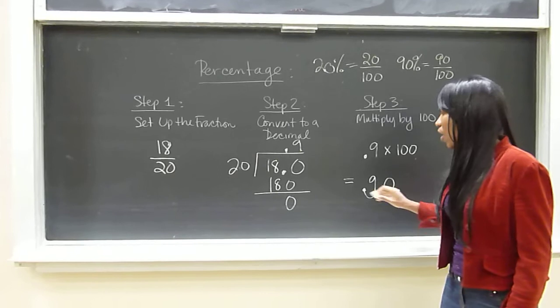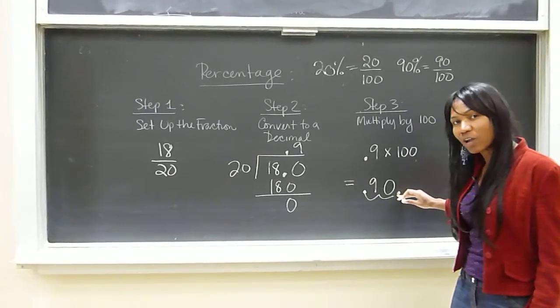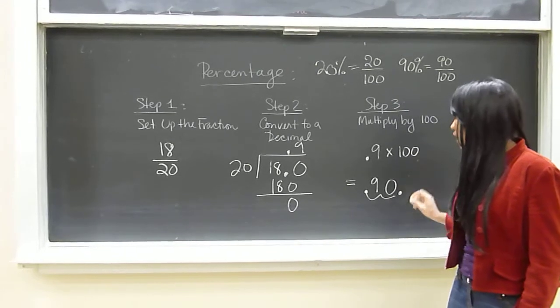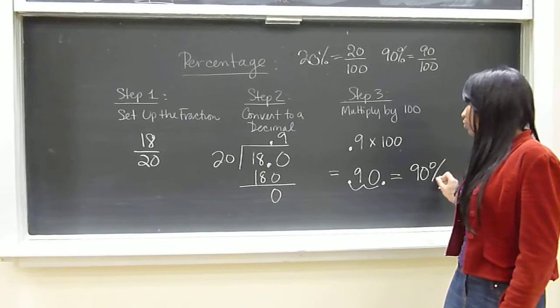Our decimal would be now after 9, and it would be another space after 9, and we put a zero here. So that would be the same as 90%.